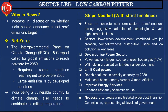The article suggests several steps with strict timelines to achieve a net zero emissions target. First, we should focus on concrete near-term sectoral transformations through aggressive adoption of technologies and avoid high carbon lock-ins. Every sector — industries, transport — should contribute less to carbon emissions. A good example is electric vehicles: by 2030, India targets at least 30 percent of total transportation to be electric vehicles. Similarly, reducing coal dependency in industry represents sectoral transformation.